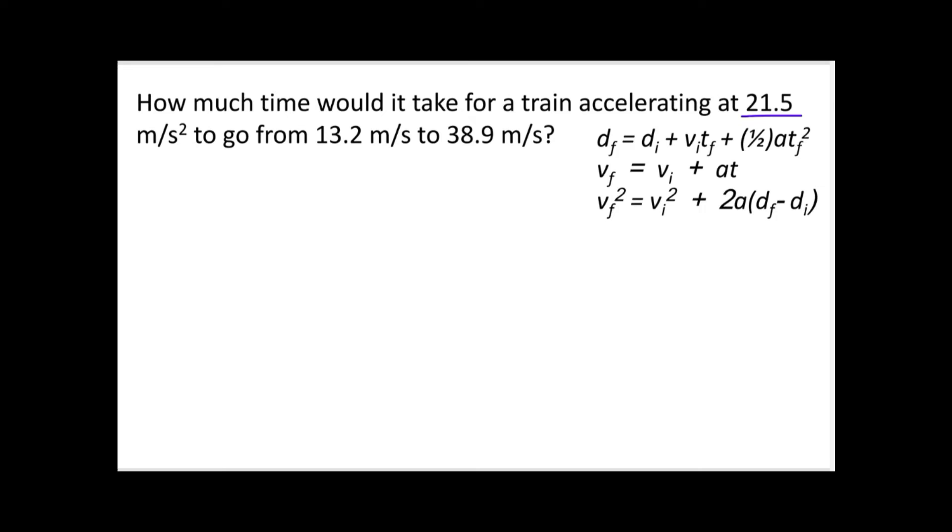And so for this one, we've got our train accelerating at 21.5 meters per second squared. And you can tell that it's an acceleration because it's got this squared right here. All accelerations will have a squared there. And then it's going from 13.2 meters per second to 38.9. So our initial velocity is 13.2 and our final velocity is equal to 38.9 meters per second. And you may have also seen V0 instead of VI. They're literally the exact same thing. There's just some people use the zeros for the initial and some people use the I for the initial. It doesn't matter. And for this one, we want a time.